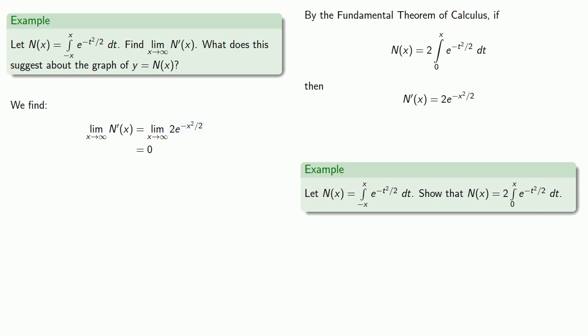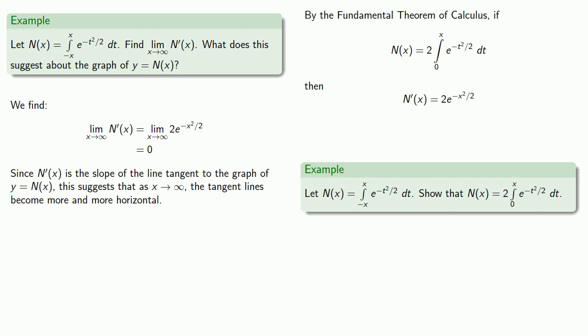And since n prime of x is the slope of the line tangent to the graph of y equals n of x, this suggests that as x goes to infinity, the tangent lines have slope going to 0, which means they're going to become more and more horizontal.